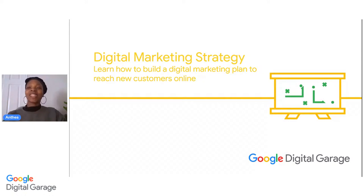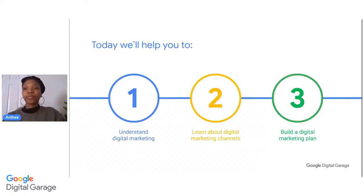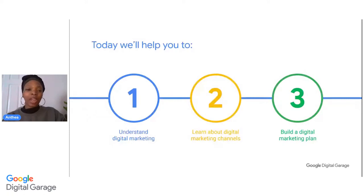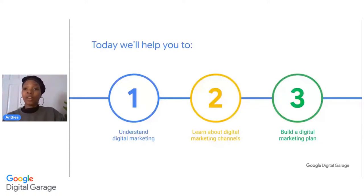So that's the housekeeping done. Let's get started with digital marketing strategy. Do make sure you drop a comment in the chat letting us know where you're from and what you're hoping to get out of today. So first of all, what we're going to do is have a look at what digital and the online world means for business, then have a look at the main channels, and then finish off by looking at how to build a plan for your digital activity and how to measure effectively.